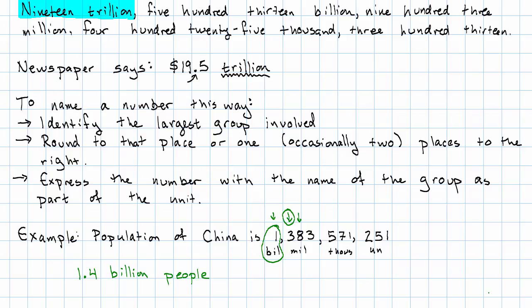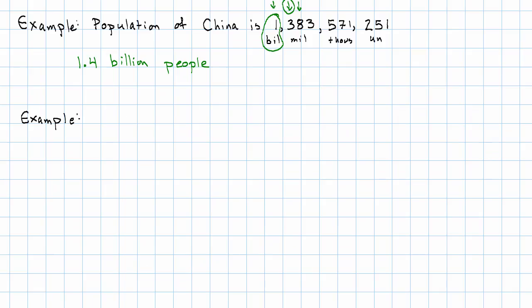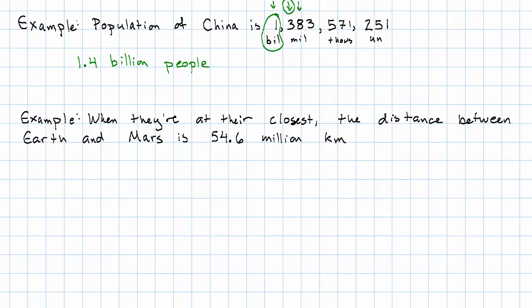If I encounter a number that looks like this, how do I translate that back into a numeral if I want to do arithmetic to it? Suppose that someone tells me that when they're at their closest, the distance between Earth and Mars is fifty-four point six million kilometers. If I wanted to write that like a number I could do arithmetic to, I would think about my groups. I've got millions, and then thousands, and then units. So that fifty-four is going to go in the millions group. And then the decimal point lines up with this comma. So then right after the comma, I'll have a six. And then I need to fill in all the remaining places with zeros.